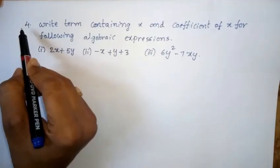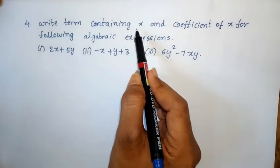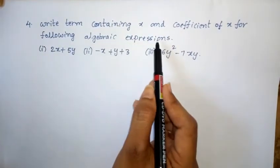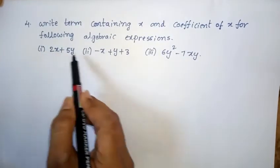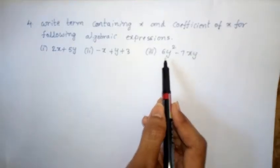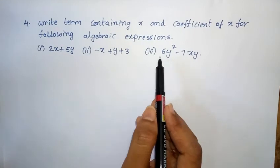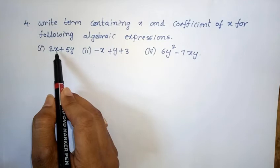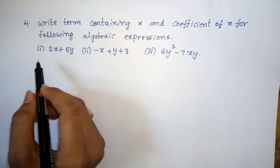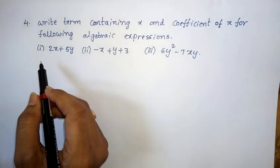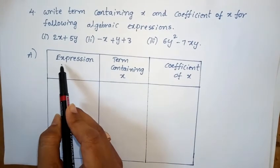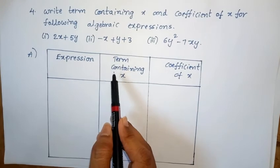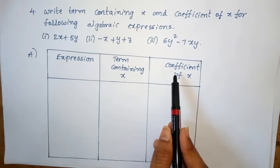Fourth problem: write the term containing x and the coefficient of x for the following algebraic expressions. Three expressions are given. We need to find the term containing x and also the coefficient of x only. Construct a table with columns: expression, term containing x, and coefficient of x.